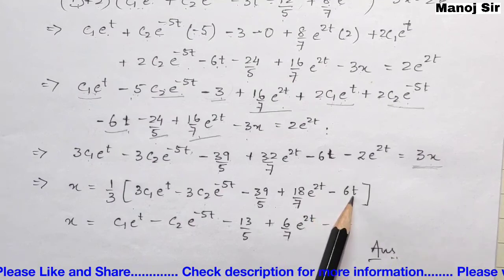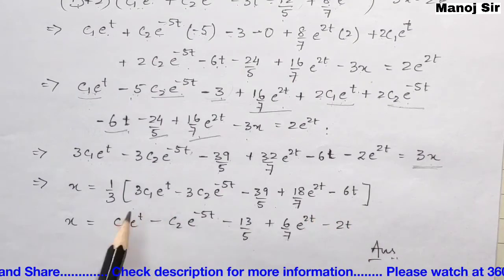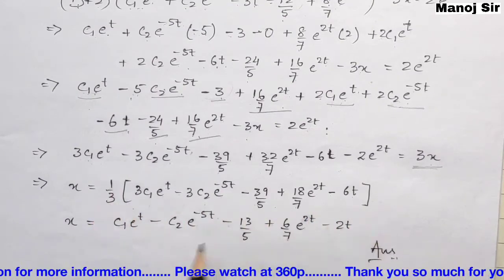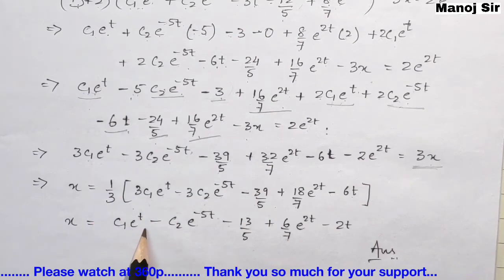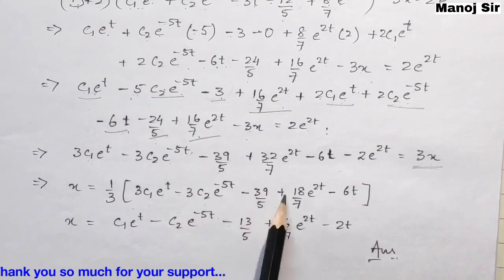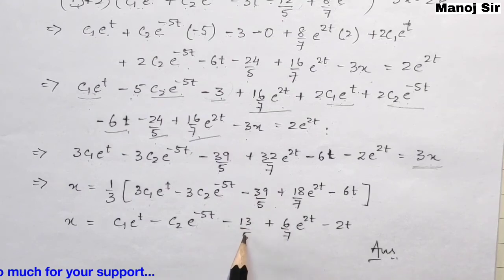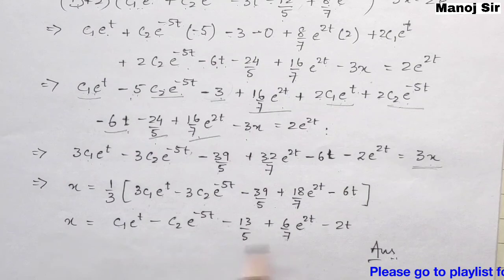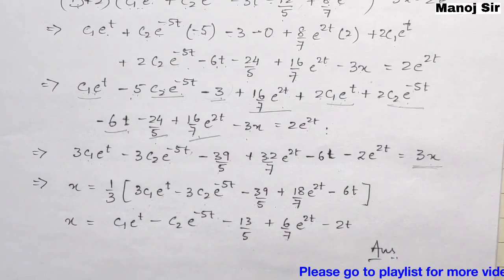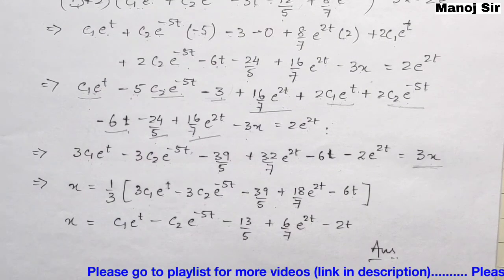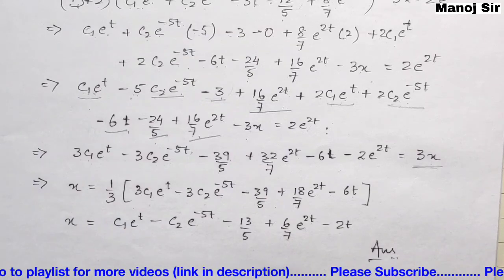Dividing through by 3, the final solution for x is: x = c1·e^t − c2·e^(−5t) − 13/5 + (6/7)e^(2t) − 2t. This completes the solution for both x and y. Thank you so much.